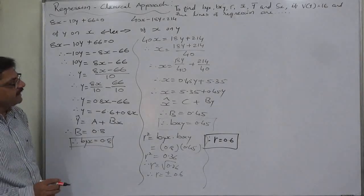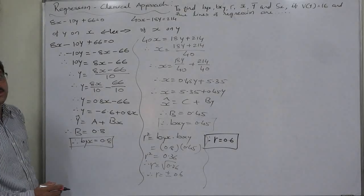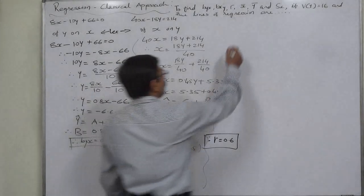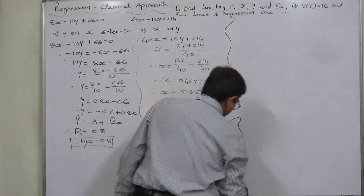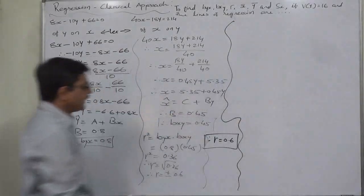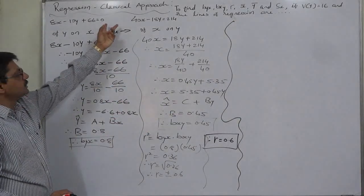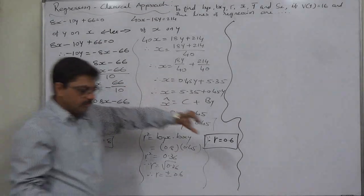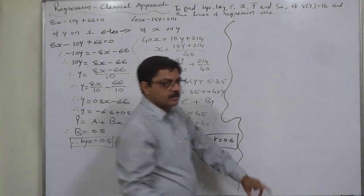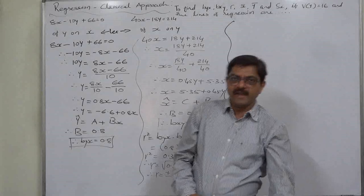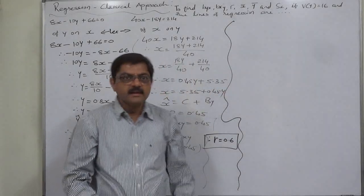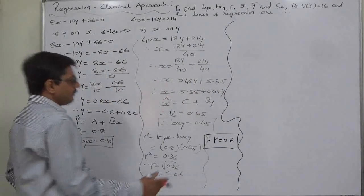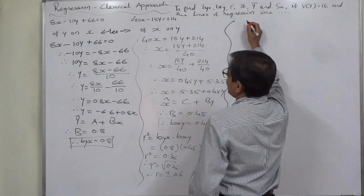In this way, we have all three coefficients. Now we can move forward to find out the two means, which is straightforward — we simply solve the two regression equations simultaneously. Solving these equations gives us the values of x and y, which are respectively the means x̄ and ȳ.